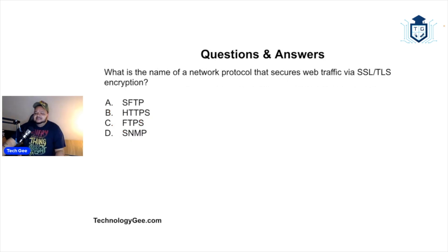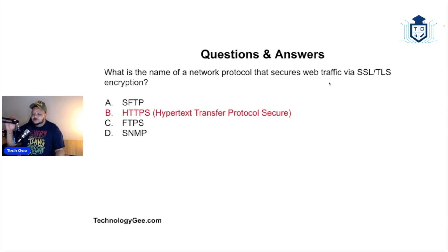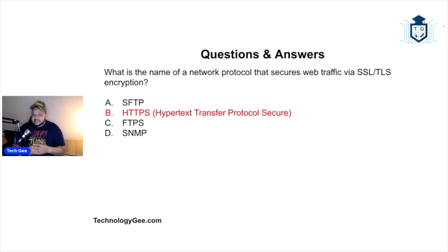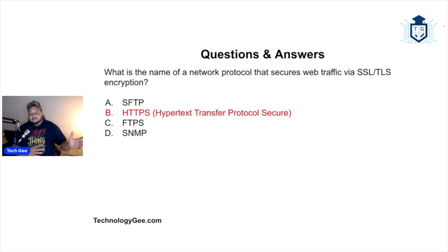What is the name of a network protocol that secures web traffic via SSL/TLS encryption? Is it SFTP, HTTPS, FTPS, or SNMP? SSL stands for Secure Sockets Layer and TLS stands for Transport Layer Security. The correct answer is HTTPS — Hypertext Transfer Protocol Secure. There are two forms: HTTP was the standard when the internet started in the 90s, and HTTPS came about due to e-commerce when people wanted to securely pay online.